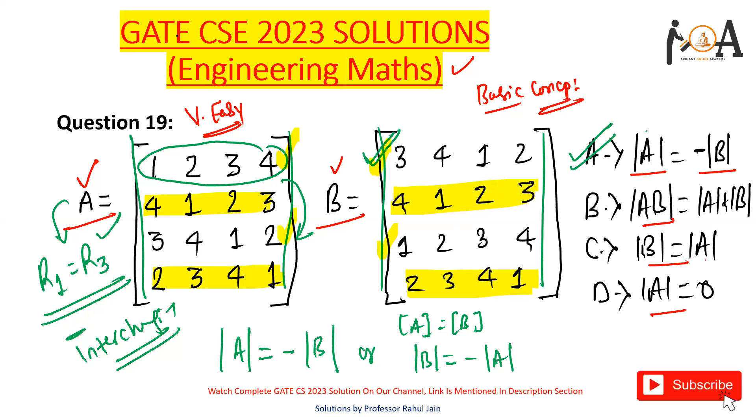So option A is correctly matching here. That is, determinant of A is negative of determinant of B. Very easy question. You only need to have focus in this question and basic knowledge, basic concepts, and easily you can solve this.